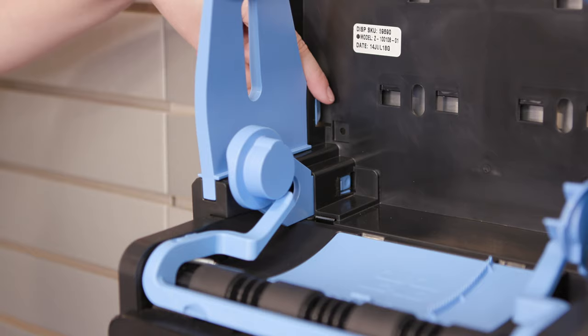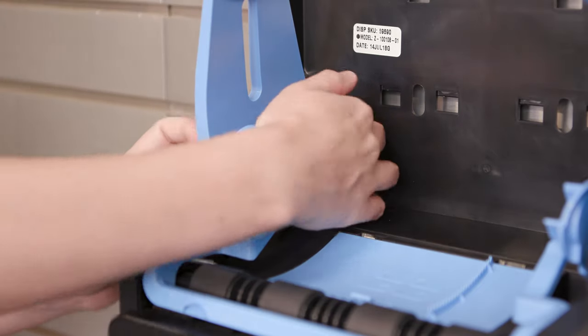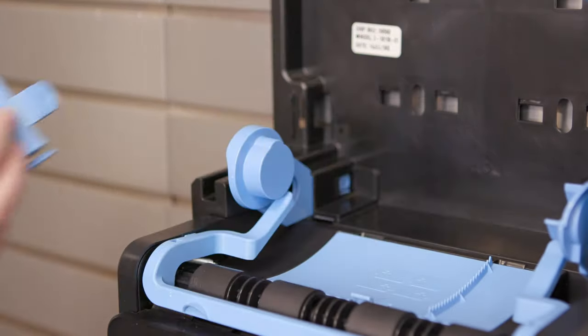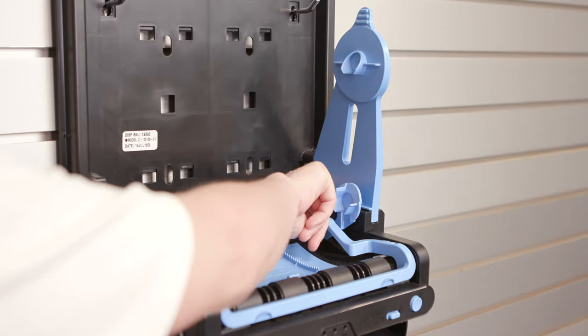First, start by pressing the tab behind the roll holder and sliding the roll holder out. You'll want to do this on both sides.